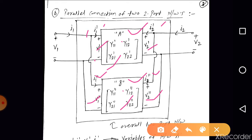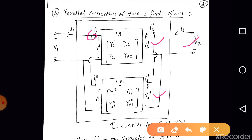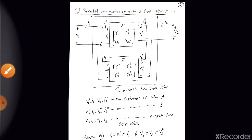To connect these two networks in parallel, the voltage across both networks should be the same. So total voltage V1 is connected as V1-dash and also as V1-double-dash, meaning V1 = V1-dash = V1-double-dash. Applying KCL, I1 = I1-dash + I1-double-dash. Similarly for the output port, V2 = V2-dash = V2-double-dash, and applying KCL, I2 = I2-dash + I2-double-dash.